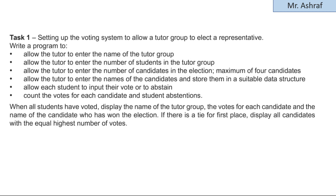Let's recall the requirements of Task 1. It's about setting up a voting system to allow a tutor group to elect a representative. The program should allow the tutor to enter the name of the tutor group, the number of students in the group, and the number of candidates in the election — a maximum of four candidates. This is very important for input validation.